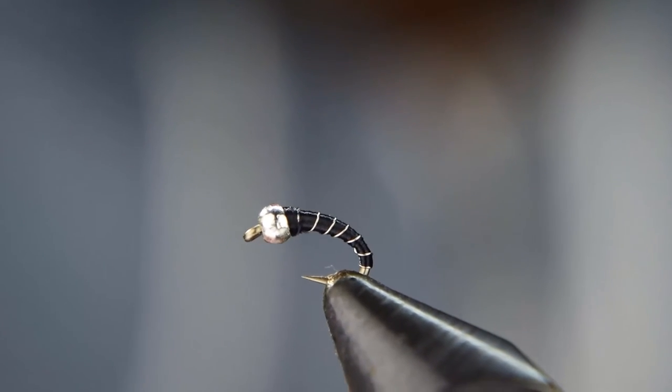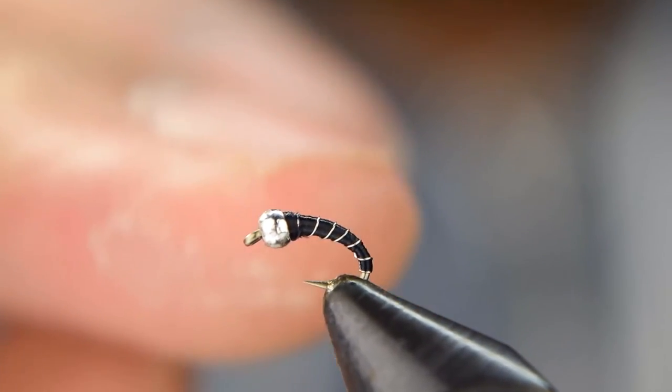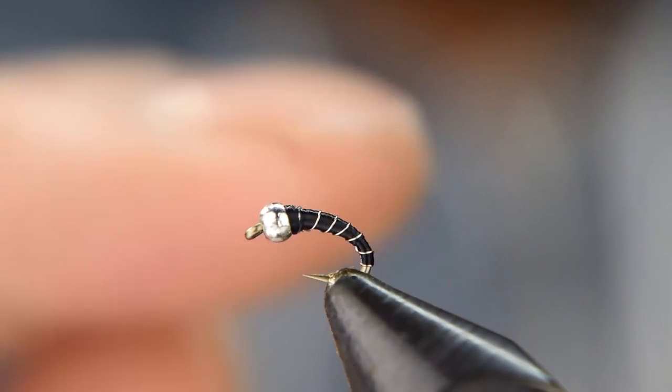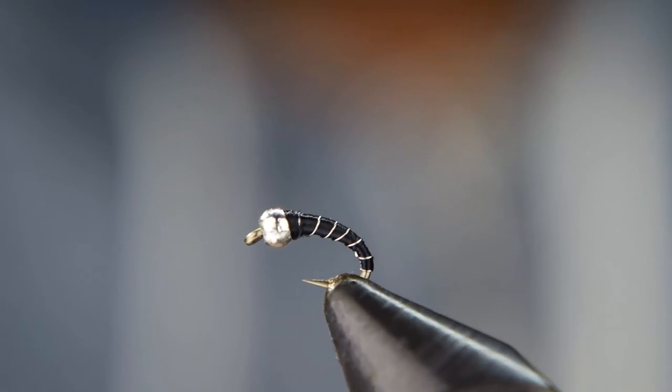And there you go. You get a nice zebra midge. You can put a droplet of head cement on here to make sure that those wraps don't come undone, but I'm not going to do that now because I like to just leave it the way it is.